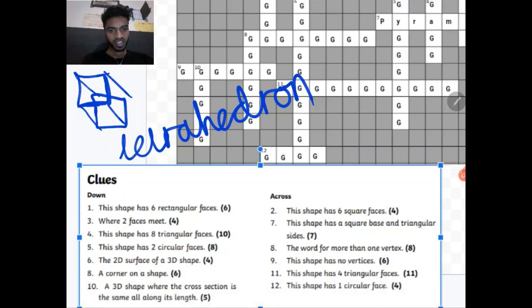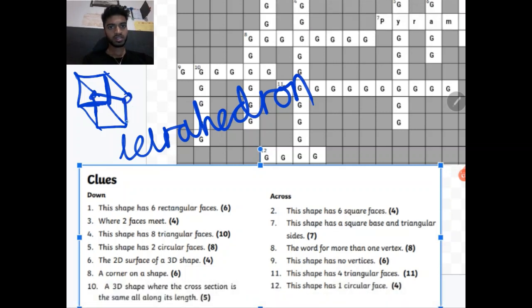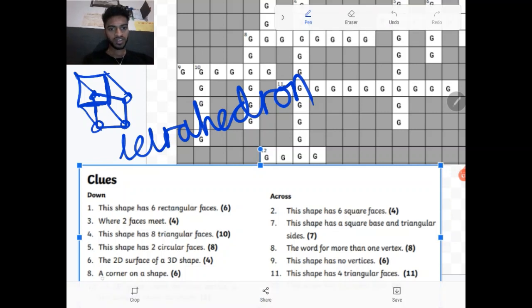A corner of a shape. The corner of a shape. So these bits here. These corners are called vertices. And because it's referring to only one, a corner, we're going to refer to it as a vertex.